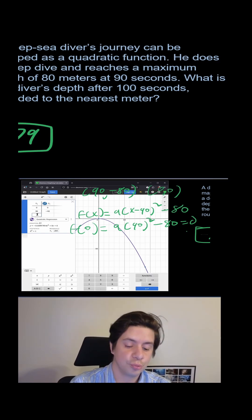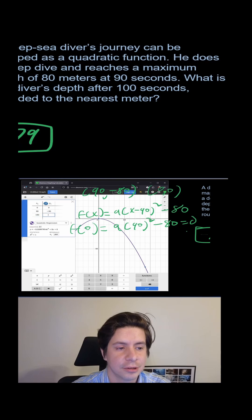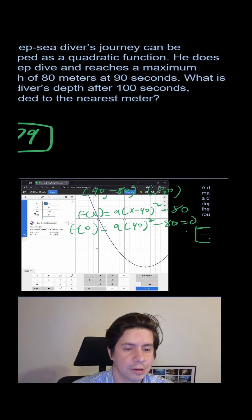What you could do is you could do 180 because it has to be symmetrical. So at 180 seconds, you're going to be back to the top at zero. So we have the same thing.